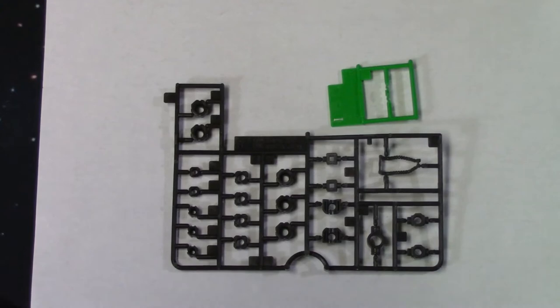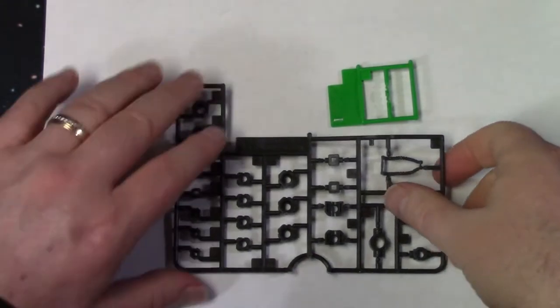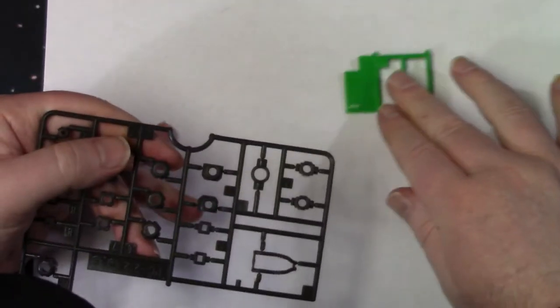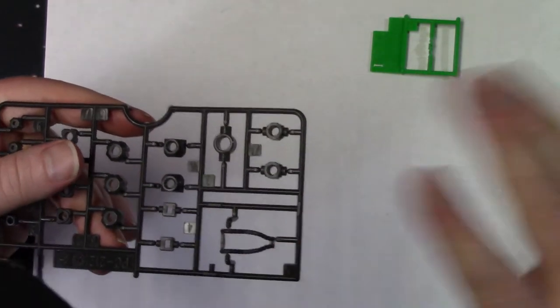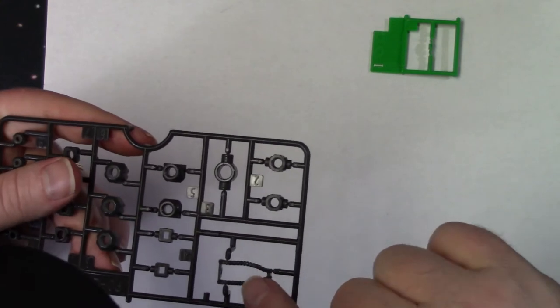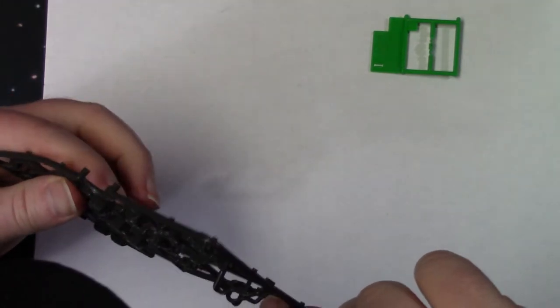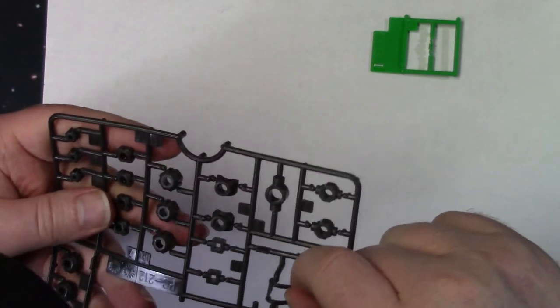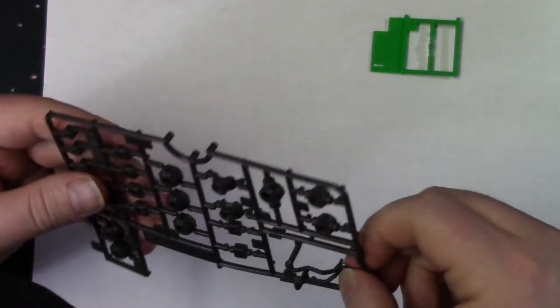All right. Here we have the PC sprue and the I sprue. The PC sprue, as you can guess, is polycaps. There's something new on here, though, that I've never seen before in a kit. I mean, what do I know, right? But, these little pipes here. That's pretty cool. Little polycap pipes. Very weak. But, I'm sure once they go on, it'll be pretty cool. There we go.